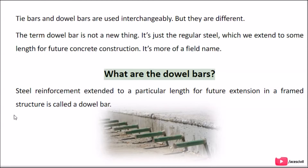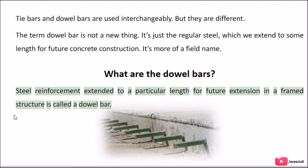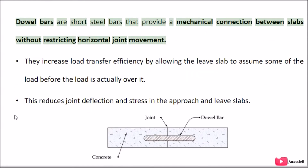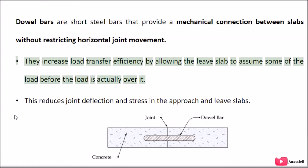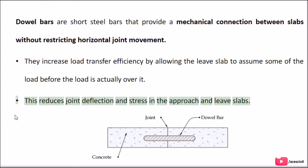What are dowel bars? Steel reinforcement extended to a particular length for future extension in a framed structure is called a dowel bar. Dowel bars are short steel bars that provide a mechanical connection between slabs without restricting horizontal joint movement. They increase load transfer efficiency by allowing the leaf slab to assume some of the load before the load is actually over it. This reduces joint deflection and stress in the approach and leaf slabs.